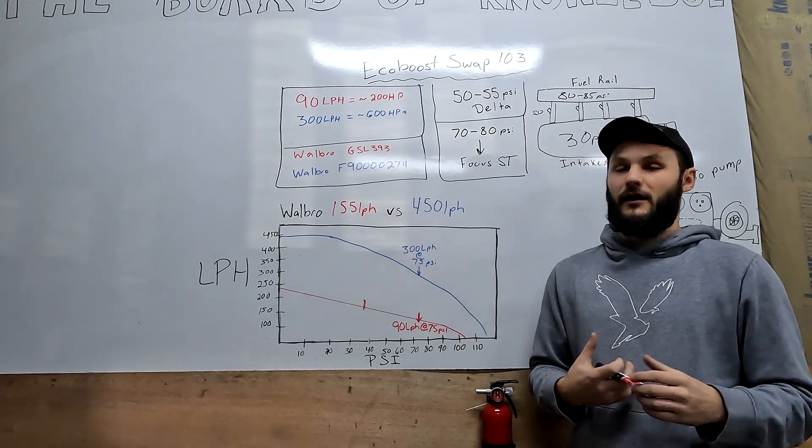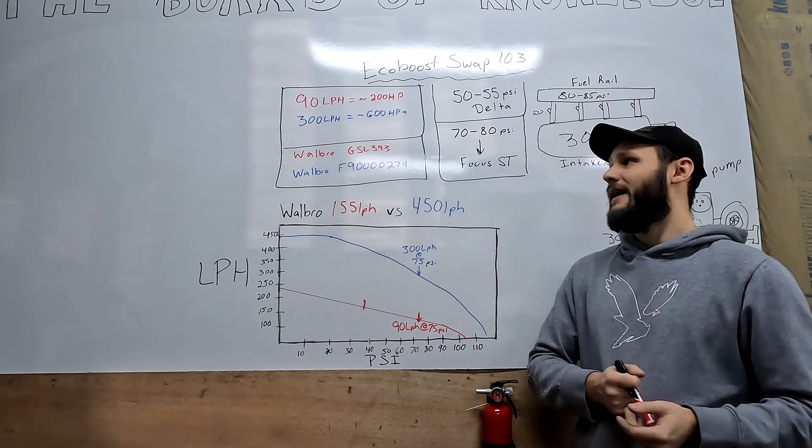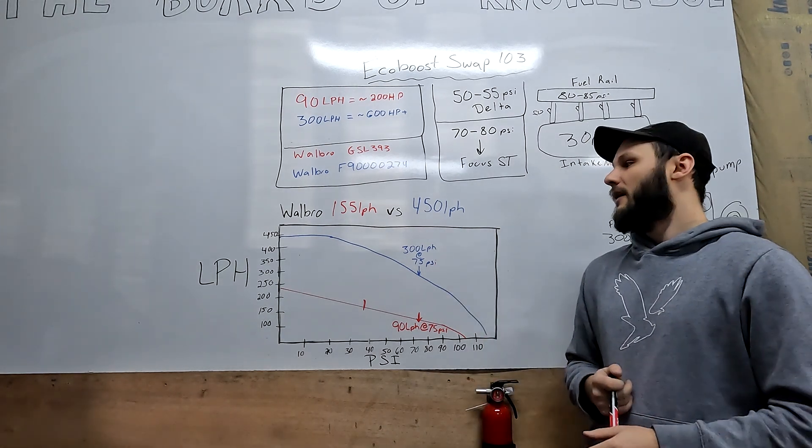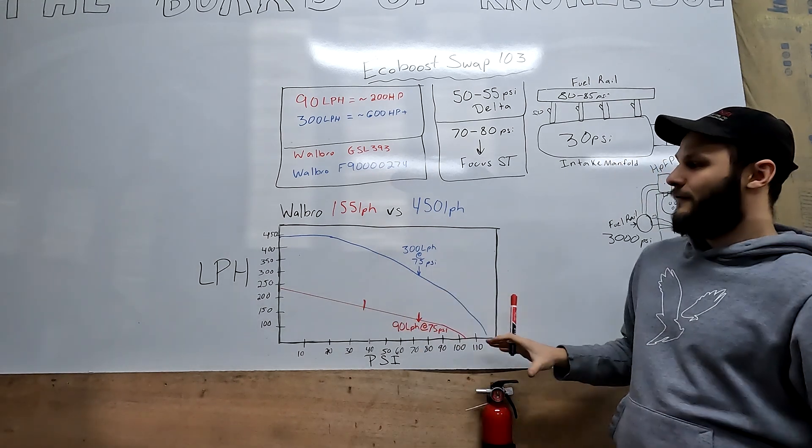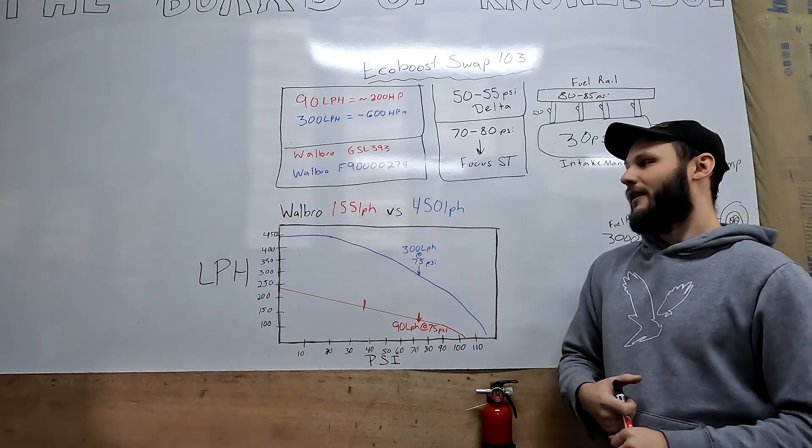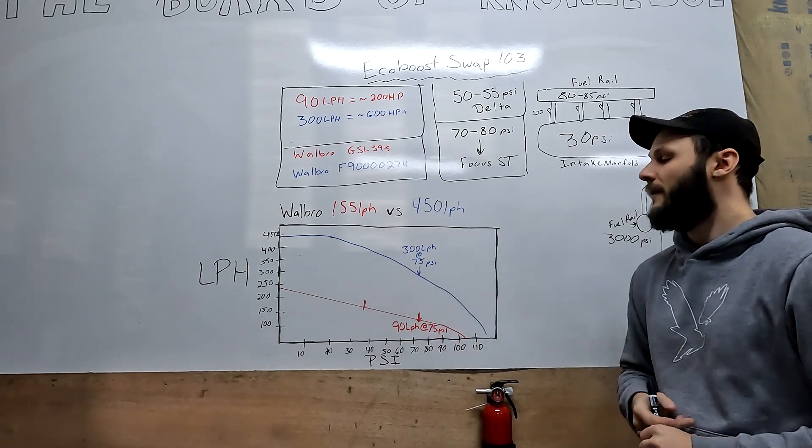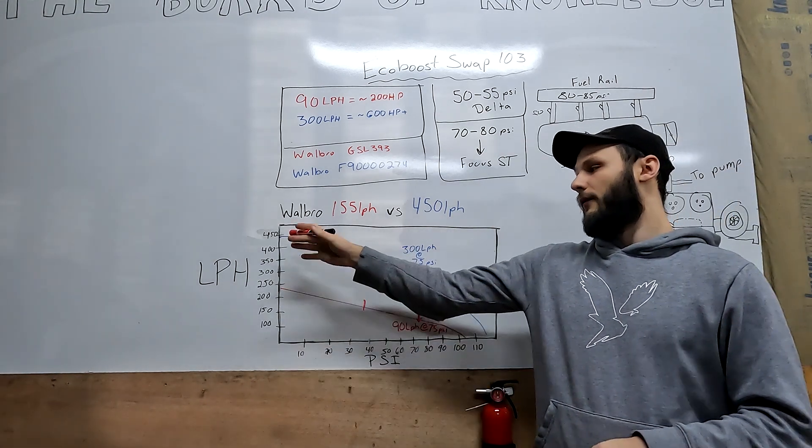They say to use at least a 155 liter per hour pump. That's good if it actually flows 155 liter per hour, because that's about 300 horsepower with fuel. It doesn't give you a lot of headroom, but it could work. What I recommend is running something more like a 450 liter per hour pump, because if you take a look at this graph that I've drawn out here, this is comparing the Walbro 155 versus 450 liter per hour pump.